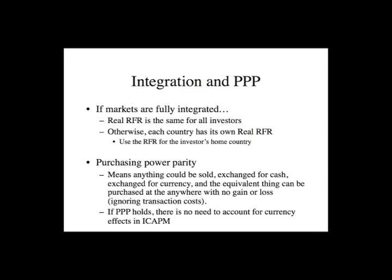Purchasing power parity — what does that really mean? Basically, if you took a basket of stuff — a computer, an automobile, a month's supply of groceries, a month's rent — and sold that basket for cash, then converted the cash into another currency and in that country bought the exact same group of things, the idea is that you wouldn't have any gain or loss other than transaction costs. That's what purchasing power parity means. If it holds, there's no need to account for currency effects in ICAP-M, because one conclusion is that real exchange rates can't change if PPP holds all the time. As a result, there will be no spot rate risk premiums, and forward rates will perfectly predict exchange rate changes.